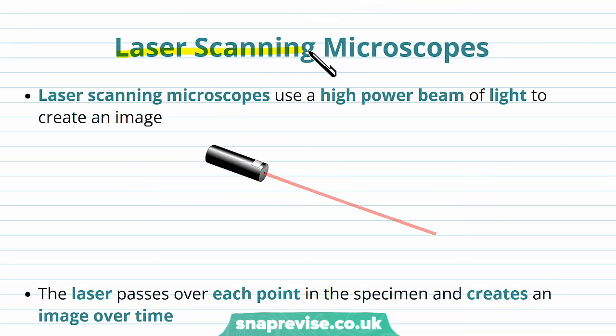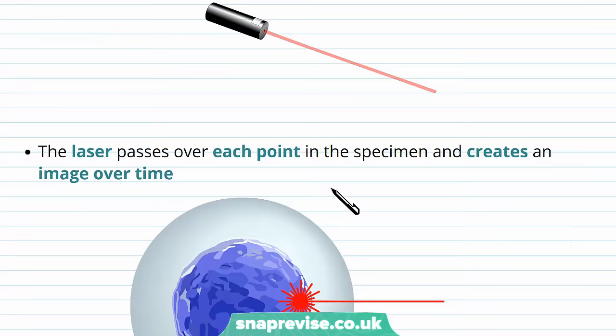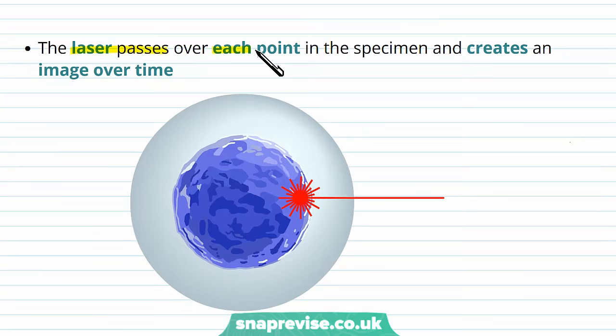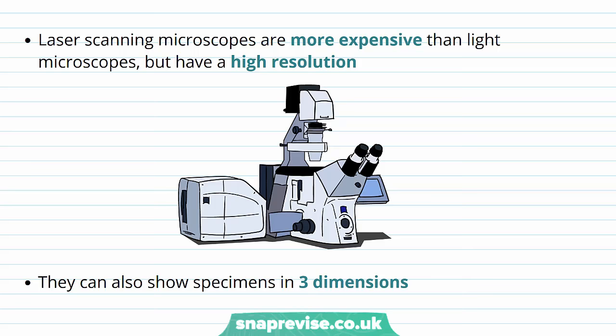Another type of microscope is known as a laser scanning microscope. They use a high power beam or a laser of light to create an image for our eyes. The laser passes over each single point of the specimen, so it takes quite a while, and it creates an image over time. Essentially, the laser is pointed at this specific point, and then the next point, and then the next point. And overall, it does a whole route across the whole cell, and it beams the light on and receives it back again. And over time, it forms a nice 3D image.